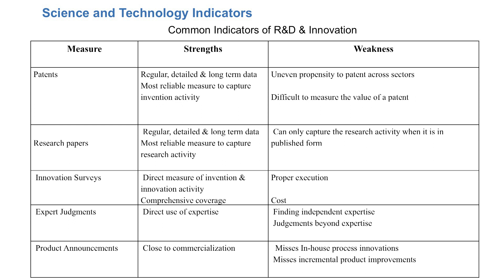Science and technology indicators can be primarily delineated in terms of patents, research papers, innovation surveys, expert judgment, and product announcements. Each has its own strengths and weaknesses. It is important to know these strengths and weaknesses, and when we do a deep analysis, to use the indicators as best as possible — or even if using just one indicator, to draw attention to its limitations.